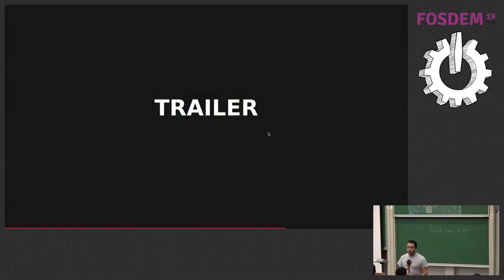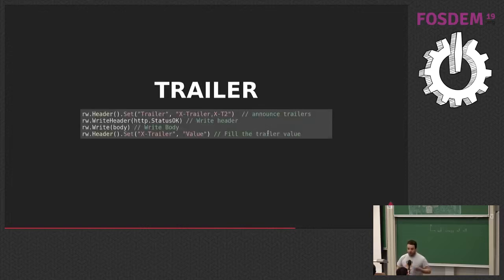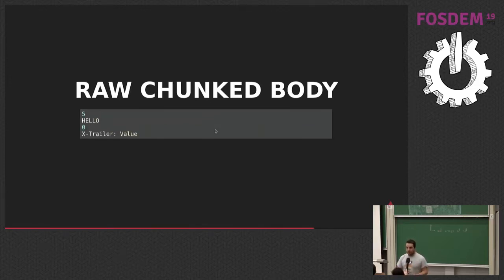Next use case: trailers. Trailers are like headers but they come after the body. As you know, headers can only be sent before you write the status code. If you want to send something after the body, you announce the trailer keys upfront before writing the status code, write your status code and body, and then set the trailer values. On the wire, the body is sent in chunks — a chunk size, then chunk content. When the chunk size is zero, that's the trailer. So the wire format looks like: five bytes, 'hello', content, then zero bytes followed by the X-Trailer value.